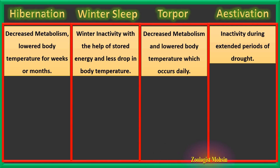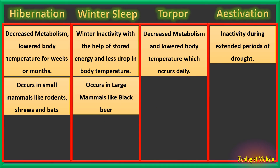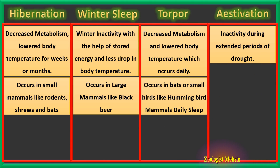Hibernation occurs in small mammals like rodents, shrews, and bats, while winter sleep occurs in large mammals like the black bear. If a black bear is sleeping in a cave and somebody disturbs it, you cannot imagine what would happen. Torpor occurs in bats or small birds like hummingbirds.